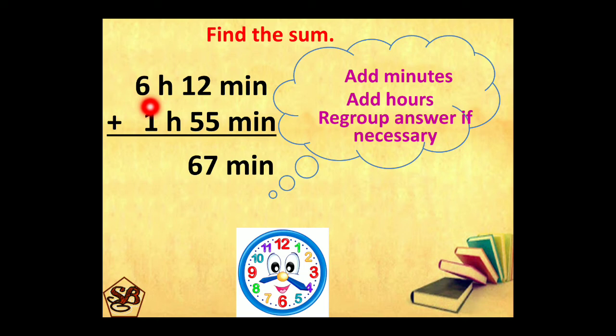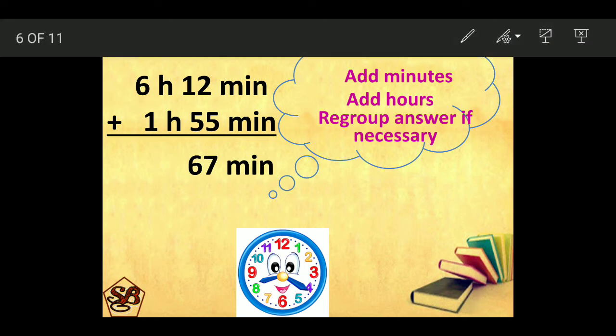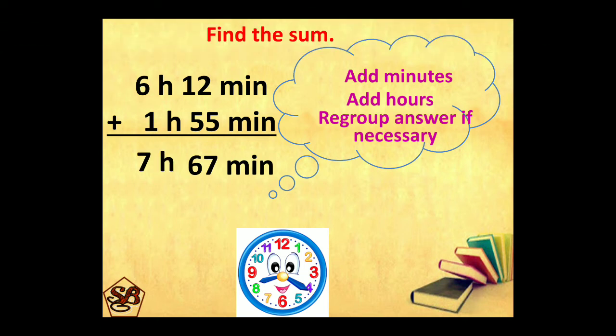Adding hours, 6 plus 1 is 7. 7 hours 67 minutes. Now looking at the smaller unit, 67 is greater than 60. So we will regroup it.